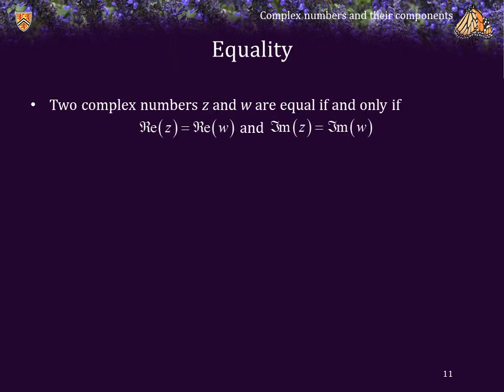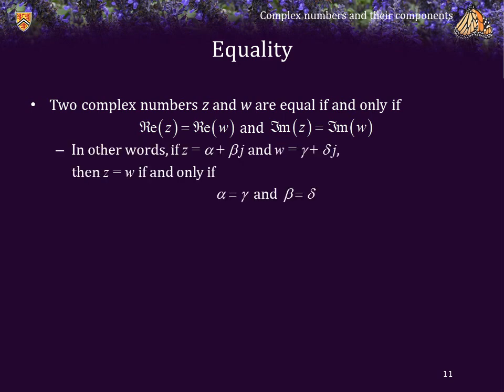Two complex numbers z and w are equal if and only if their real components are equal and their imaginary components are equal. In other words, if z equals alpha plus beta j and w equals gamma plus delta j, then z equals w if and only if alpha equals gamma and beta equals delta.